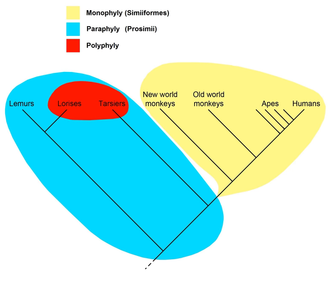Conversely, the term monophyly, or monophyletic, builds on the ancient Greek prefix monos, meaning alone, only, unique, and refers to the fact that a monophyletic group includes organisms consisting of all the descendants of a unique common ancestor.